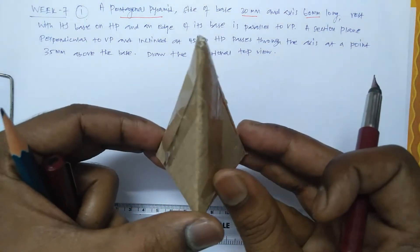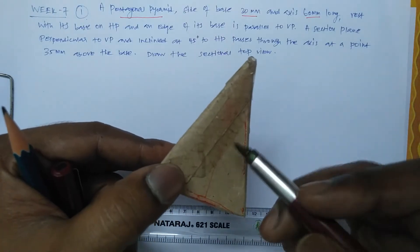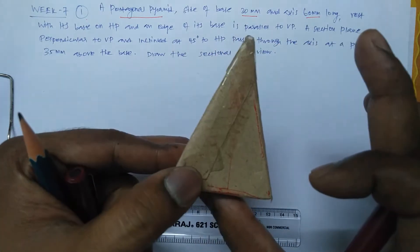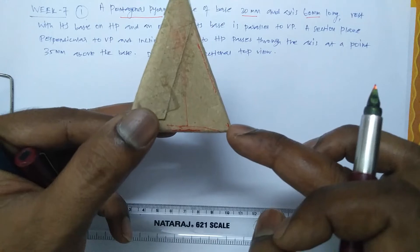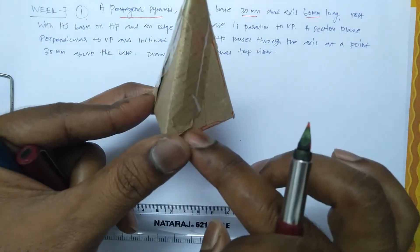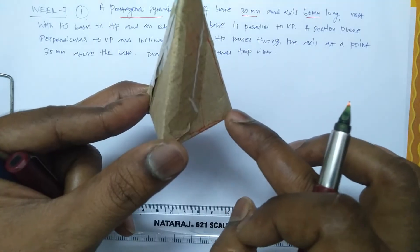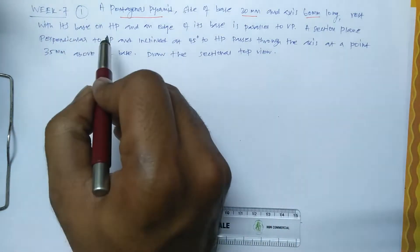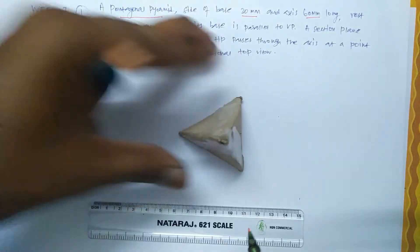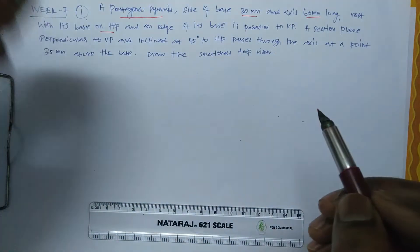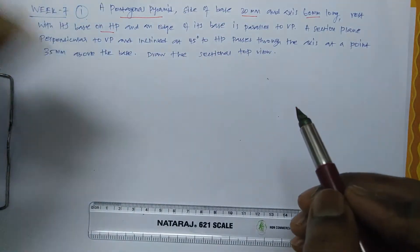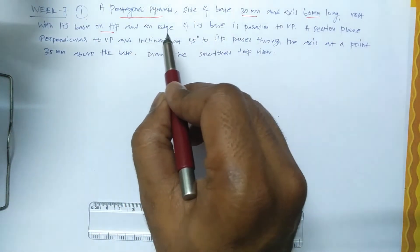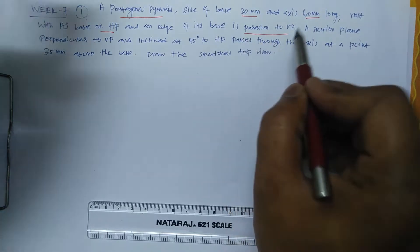A pentagon has five sides. This is the apex, this is the base, and these are the edges. The question states: the pyramid rests with its base on HP, and an edge of its base is parallel to VP.